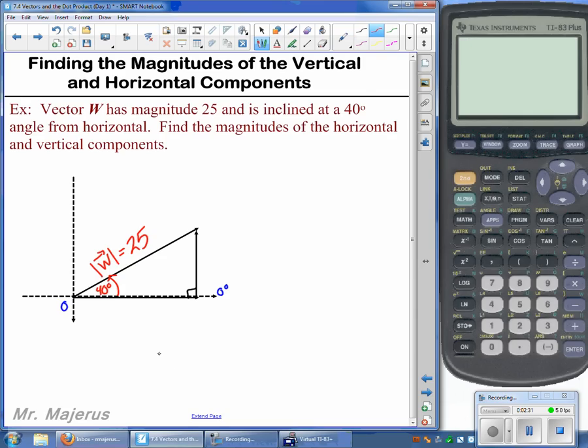Our book generally will use the horizontal component here as vector a, so that's what we're going to call this one, and we need to find the magnitude of vector a. And then also, we'll need to find the magnitude of our vertical component here, which we'll call vector b. So those are the two things we're going to be solving for.